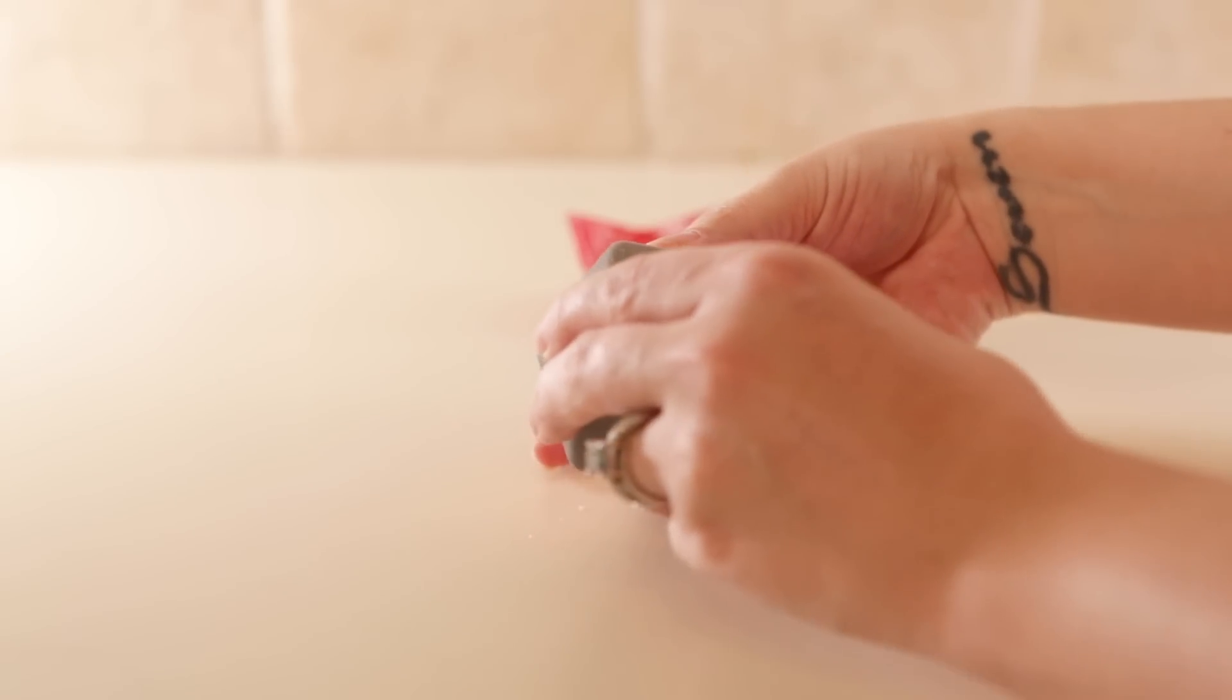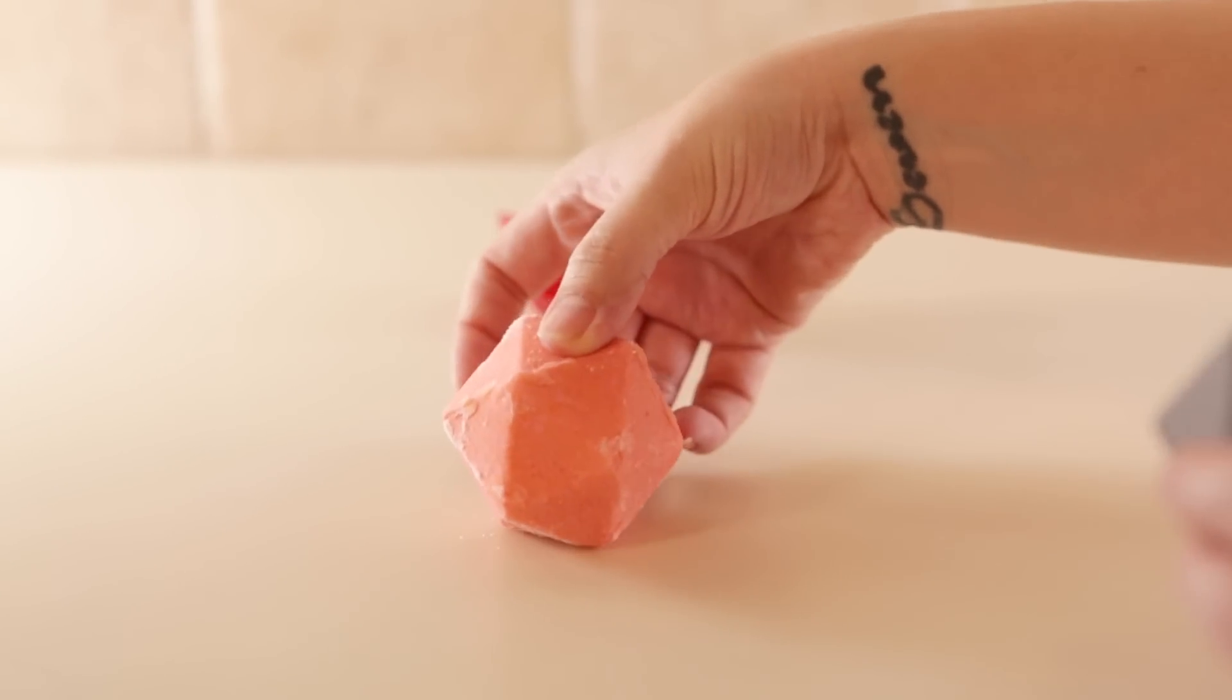And that's pretty much it. There we have it. Our icosahedron bath bomb. Now all that's left to do is to toss it in the bathtub and enjoy. These are pretty great to customize with different colors and scents. And it's a lot of fun for kids too.